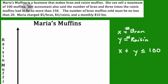Let's look at the next sentence. It says her accountant said that the number of bran and three times the raisin muffins had to be no more than 150. What does that mean? The number of bran—bran stands for x. We know that three times the raisin, that's 3y, and it has something to do with 150.